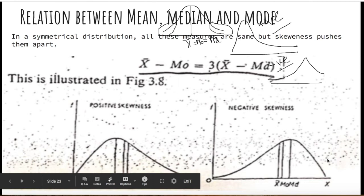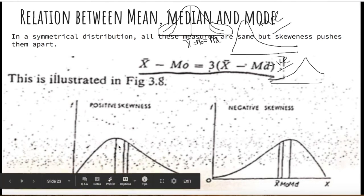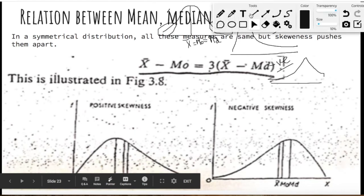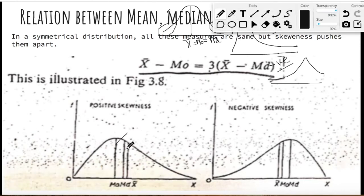Whenever there is skewness in the data, the three measures of central tendency are not equal. In the case of positive skewness, the mean increases compared to the symmetric case, mode stays at its original position, and median falls between mode and mean. So in this distribution, the order is mode, then median, then mean.